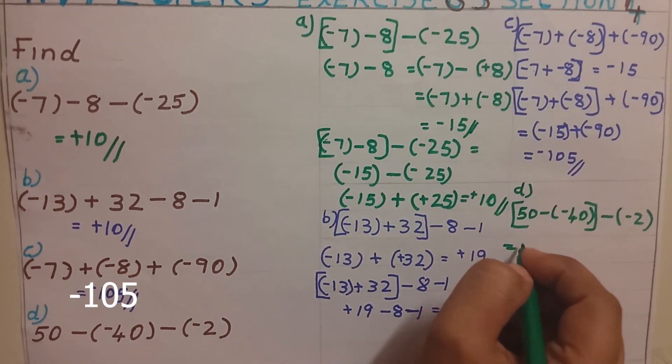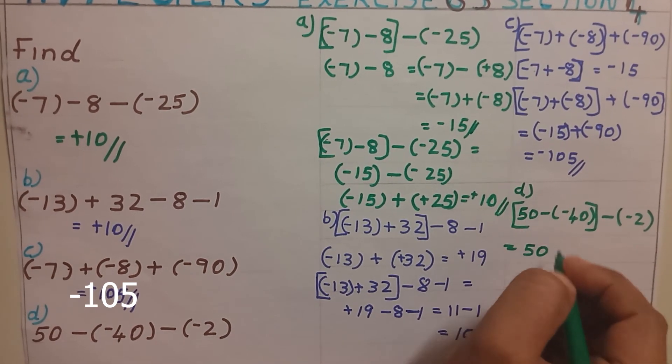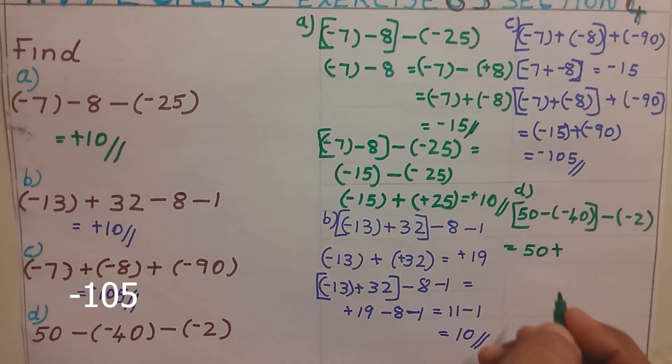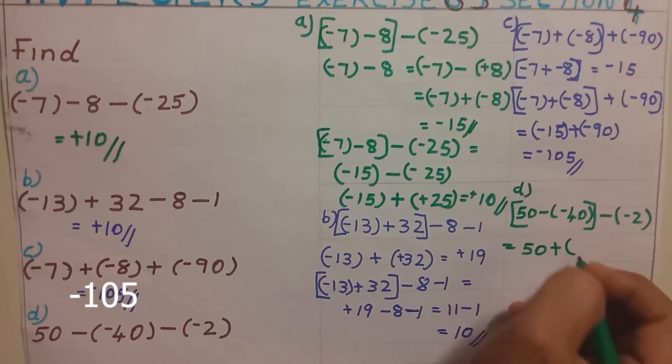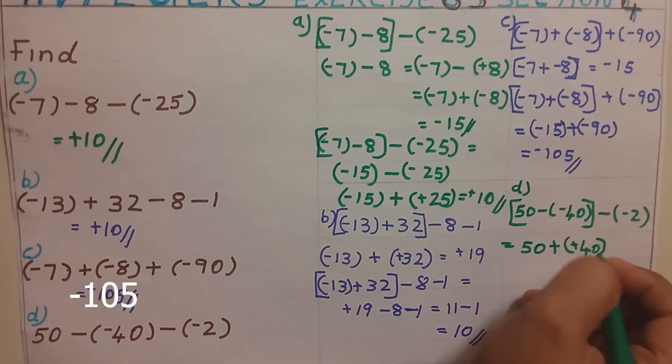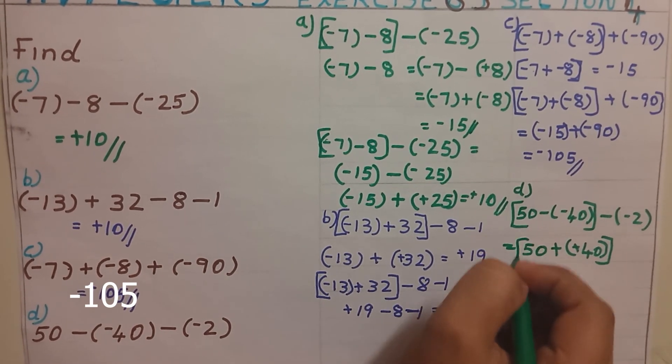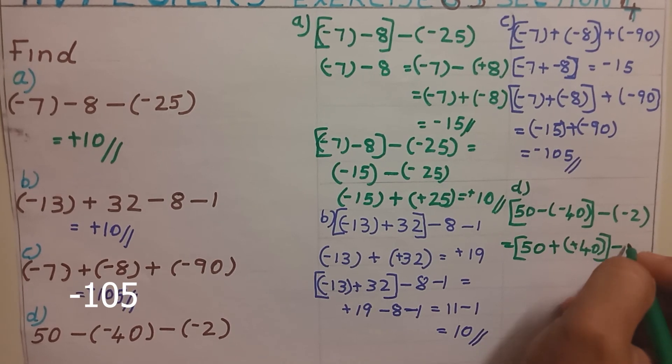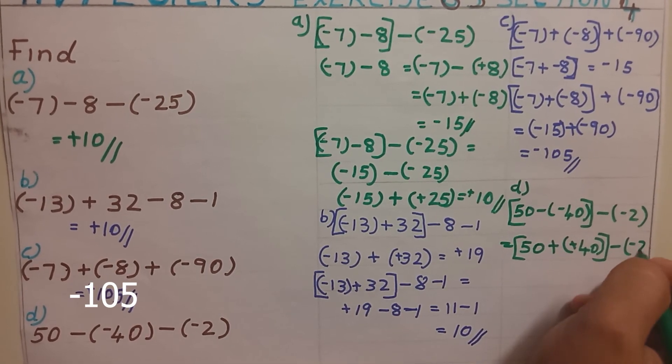I am writing it as 50. This is subtraction. I am changing it into addition and taking the additive inverse, and keeping the second number as it is.